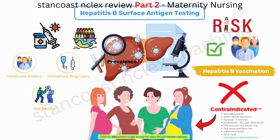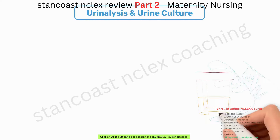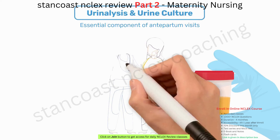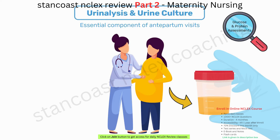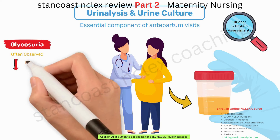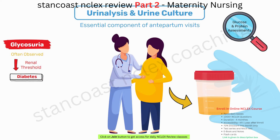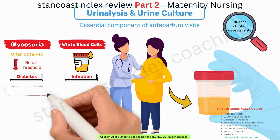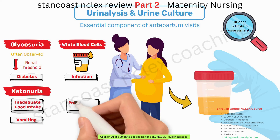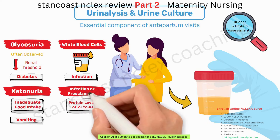Urinalysis and urine culture constitute an essential component of antepartum visits. During each visit, a urine specimen is collected for glucose and protein assessments. Glycosuria, often observed during pregnancy, may arise due to a lowered renal threshold; however, persistent glycosuria may be indicative of diabetes. The presence of white blood cells in urine points to infection, while ketonuria can result from inadequate food intake or vomiting. Protein levels of 2-plus to 4-plus in urine may suggest infection or preeclampsia, necessitating further evaluation and management.